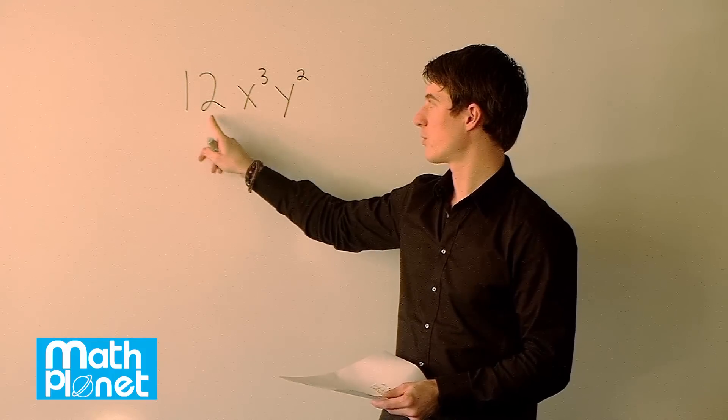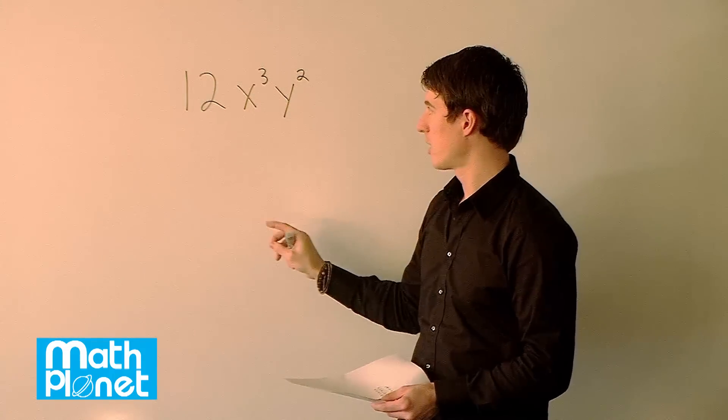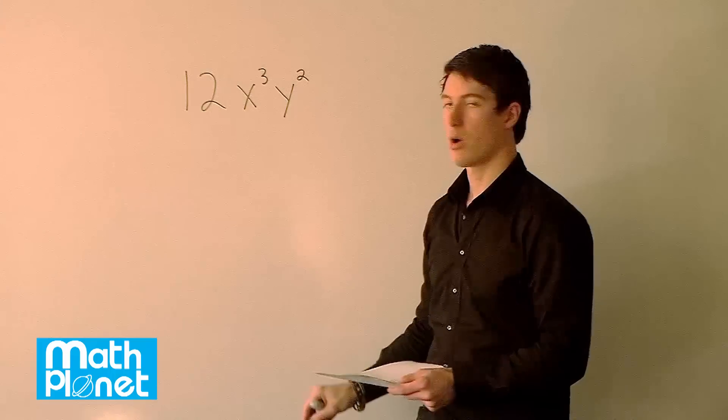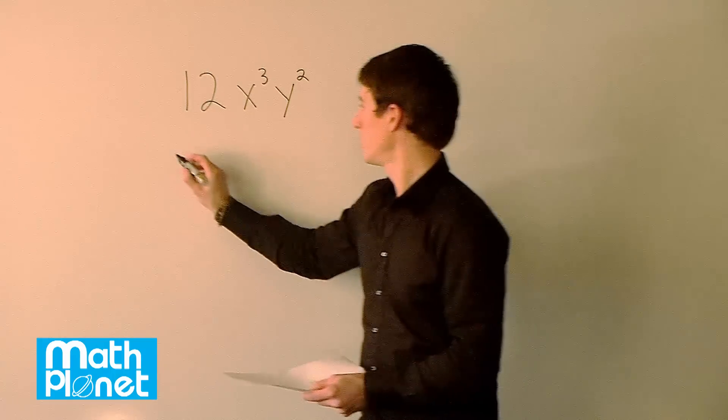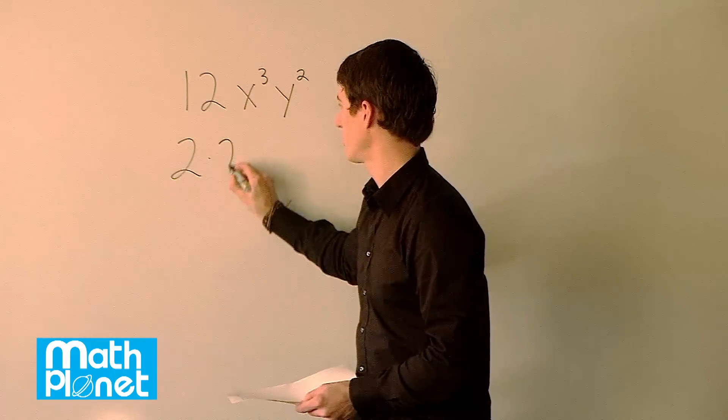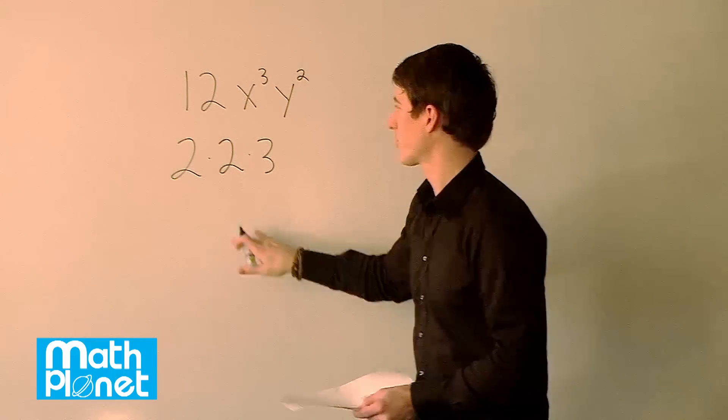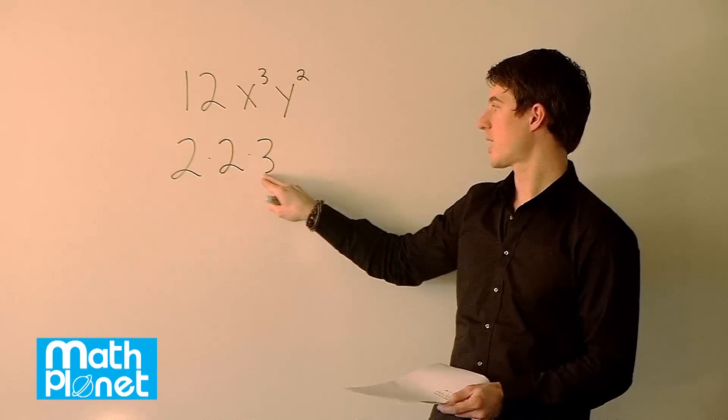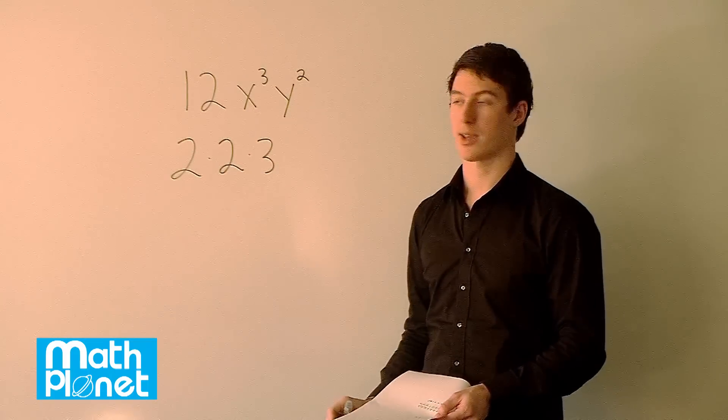So we can start by expanding the 12. We want to write it in its smallest integer factors. So we can say this is the same as 2 times 6, or that is the same as 2 times 2 times 3. So this is the most we can expand this 12. 2 times 2 is 4 times 3 is 12. That would give us the same thing back again.